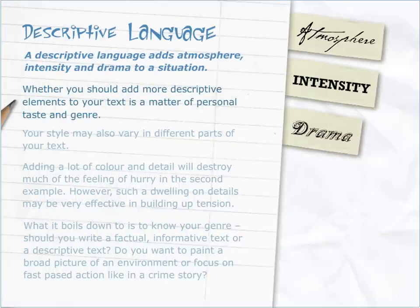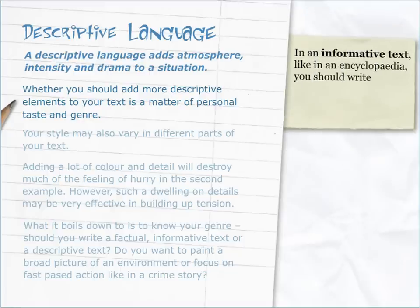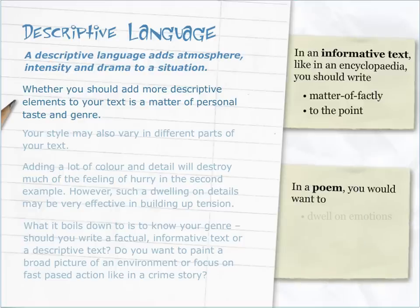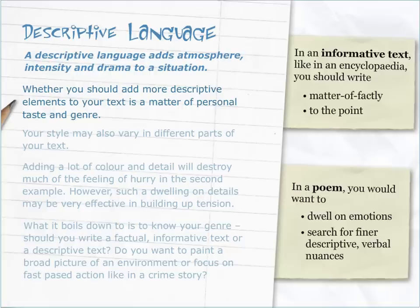Whether you should add more descriptive elements to your text is a matter of personal taste and genre. In an informative text, like in an encyclopaedia, you should write matter-of-factly and to the point. In a poem, you would want to dwell on emotions and search for finer descriptive verbal nuances.